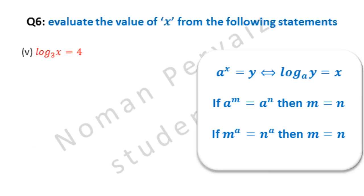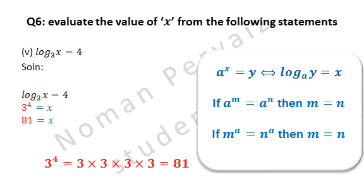We are going to solve part 5 of question number 6. Part 5 is: log base 3 of x is equal to 4. By applying the first property, this becomes 3 raised to the power 4 equal to x. 3 to the power 4 is evaluated to 81: we write 3 four times and multiply them. First 3 multiplied with 3 becomes 9, then 9 multiplied with 3 becomes 27, and lastly 27 multiplied with 3 becomes 81. So x is equal to 81. Hence, this is our answer.